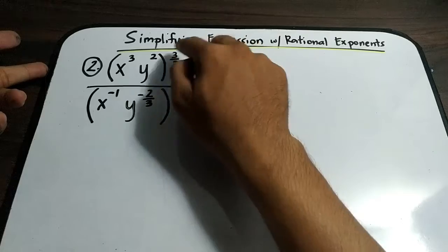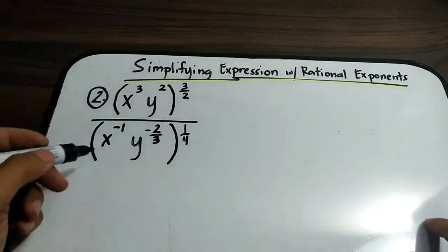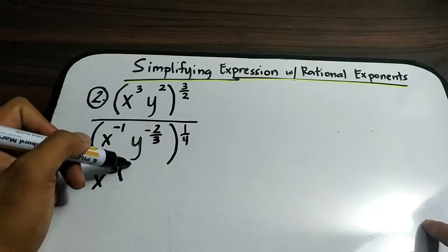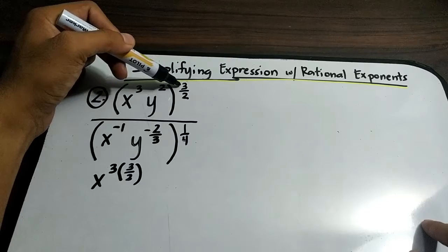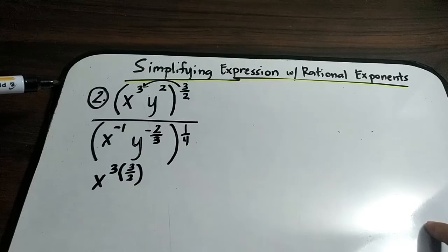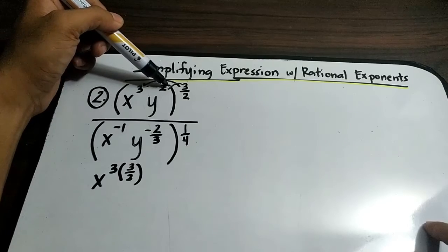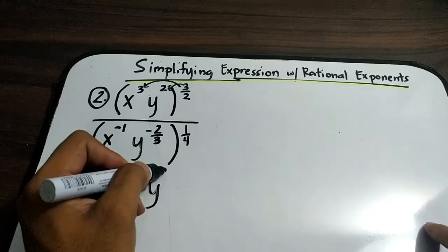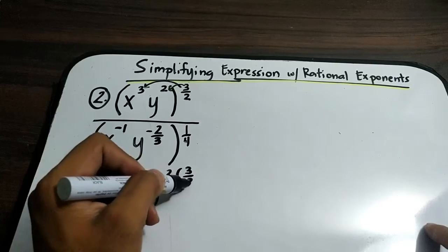First, distribute or multiply the exponents in the numerator. We have x cubed times 3 over 2 — multiply this exponent by this exponent, so we have 3 times 3 over 2. Next, for y, we have y raised to 2 times 3 over 2.